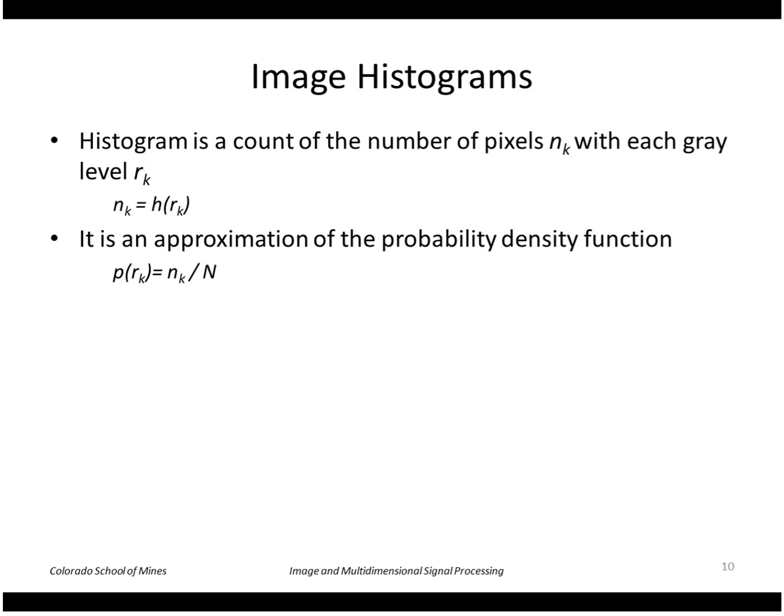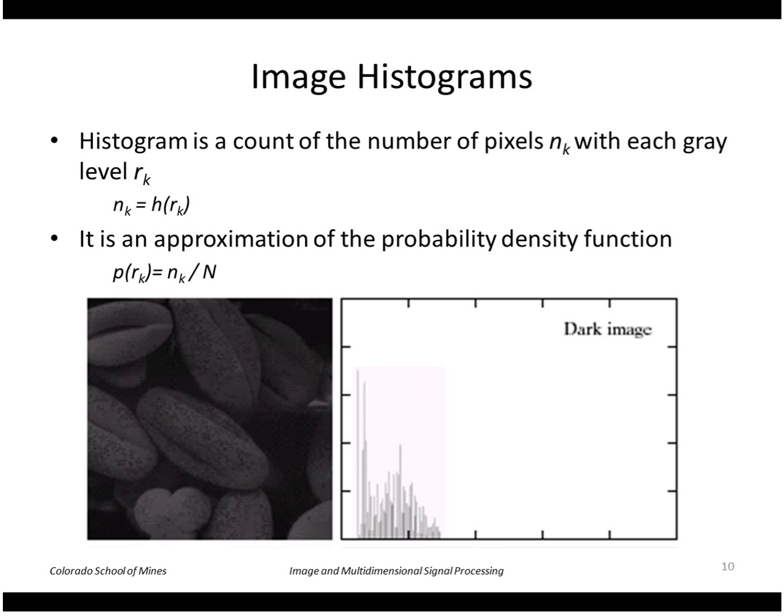Those concepts we're going to need in talking about histograms. A histogram of an image is the count of the number of pixels with each gray level. If we divide by the total number of pixels n, then we can get an approximation of the PDF or probability density function. Here's an example of the histogram of an image that's very dark: you can see the counts for low values of r are high, but we have basically zero counts everywhere else in the image.